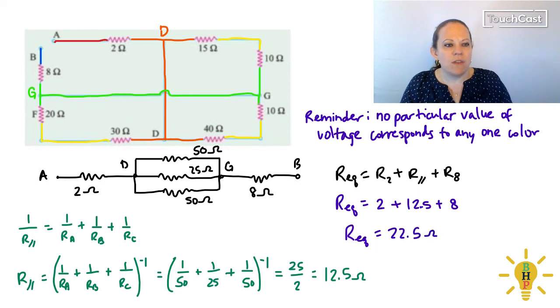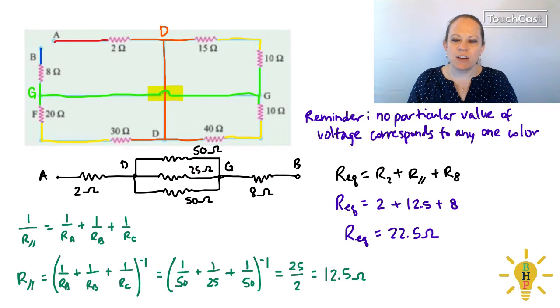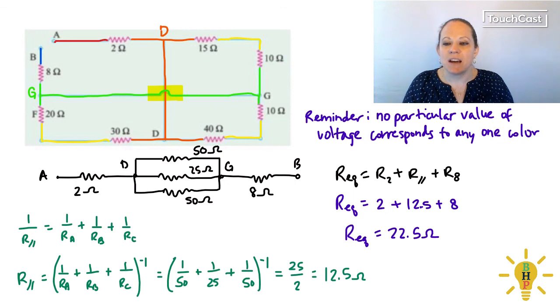So even though this particular problem given did have that interesting little hump in the middle where there was no connection, all that we want to do is apply that problem-solving method of looking to see where we can redraw the electrical connections by figuring out what's in series, what's in parallel, and simplifying the drawing, and then we can use color coding as a tool to help us figure out our parallel connections.